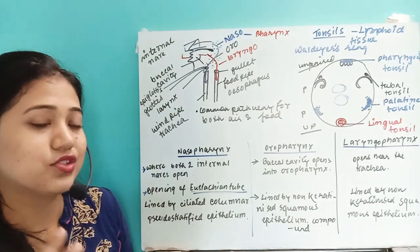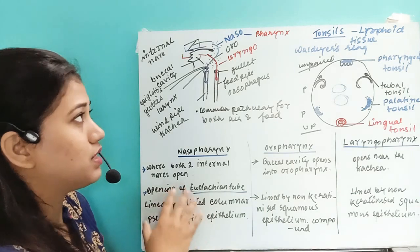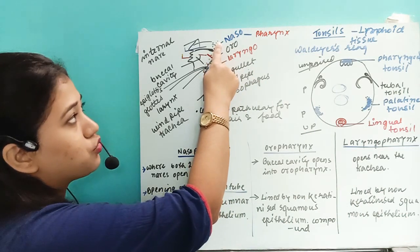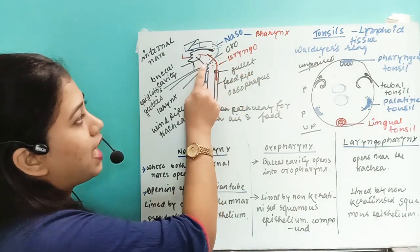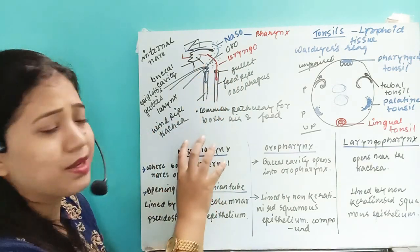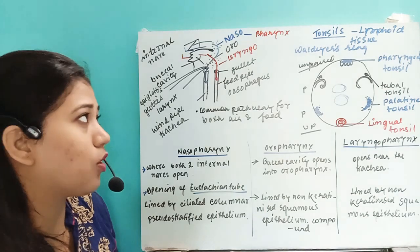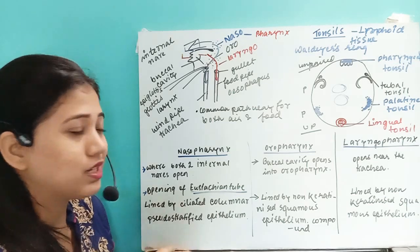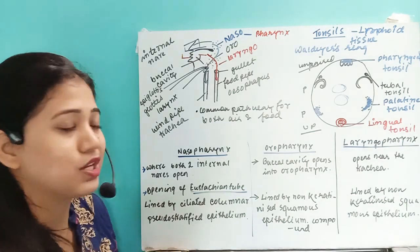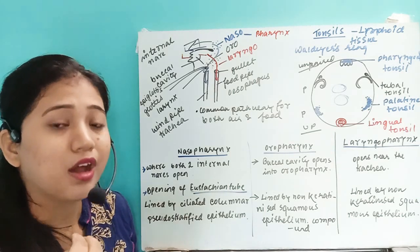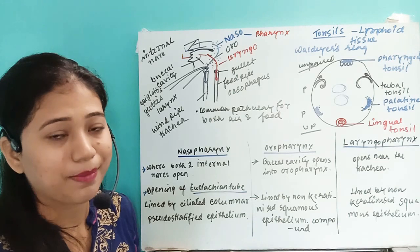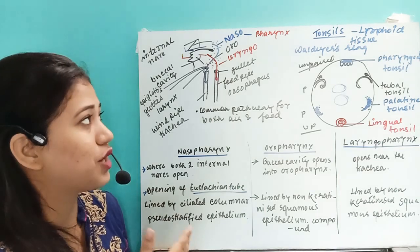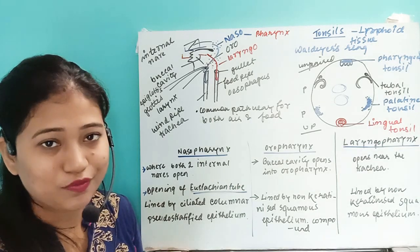To summarize, the pharynx is divided into three parts: the nasopharynx, where the internal nares open; the oropharynx, where the buccal cavity opens; and the laryngopharynx, just above the windpipe. The pharynx is the common pathway where both food and air have to cross and enter their respective tubes — the windpipe (trachea) and the foodpipe (esophagus).